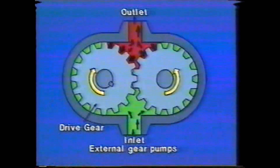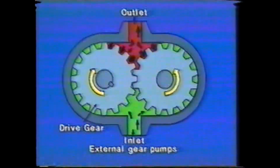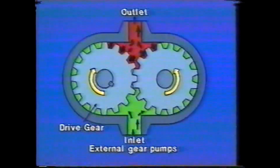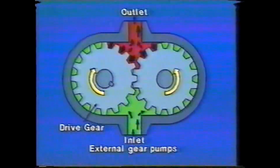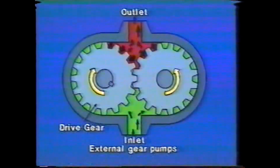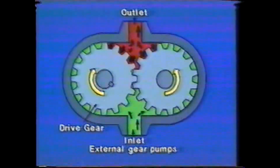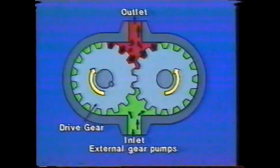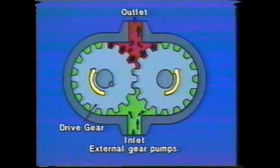One gear, driven by the drive shaft, meshes with and rotates another, called the driven gear. Both are contained within a close-fitting housing. A partial vacuum is created at the inlet as the gear teeth unmesh and fluid flows in to fill the void. Then the fluid is carried around the gears to the pump outlet. As the teeth go back into mesh, oil is forced out through the outlet port. We now have high pressure at the outlet and less than atmospheric pressure at the inlet. This condition is referred to as unbalanced hydraulic loading.